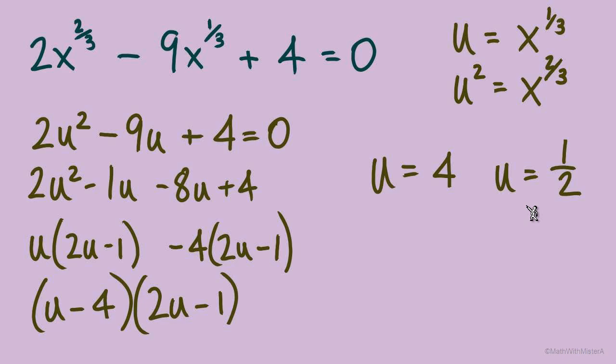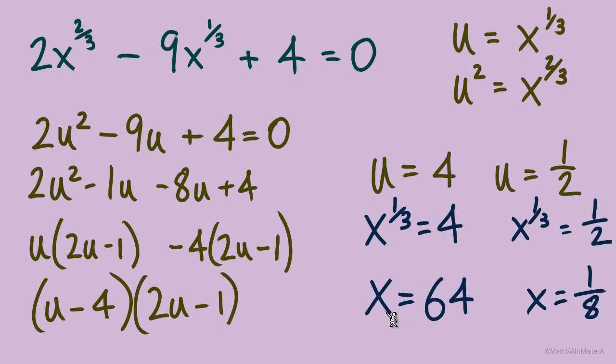The common mistake is to stop here, but remember, we have to come up with solutions that are for x, not u. Let's do our back substitution and get the x's back in. Our rule was u = x^(1/3), so our equations are x^(1/3) = 4 and x^(1/3) = 1/2. How do we solve for x with these equations? This one-third of an exponent indicates cube root, and the rule is that I multiply my exponents. We want to do both sides to the power of 3. That gives us x = 64 and x = 1/8.